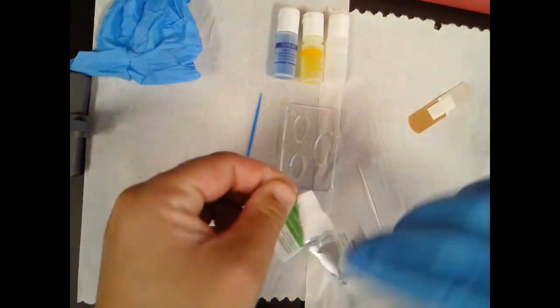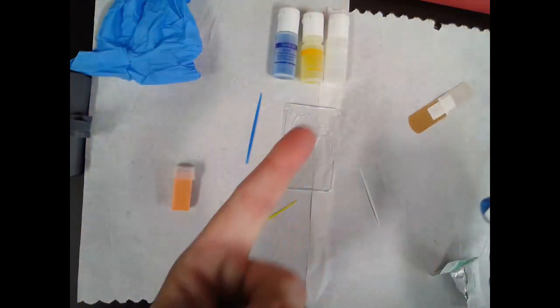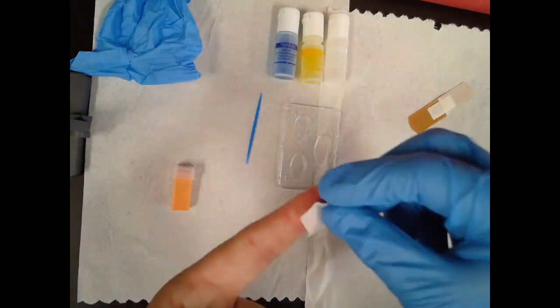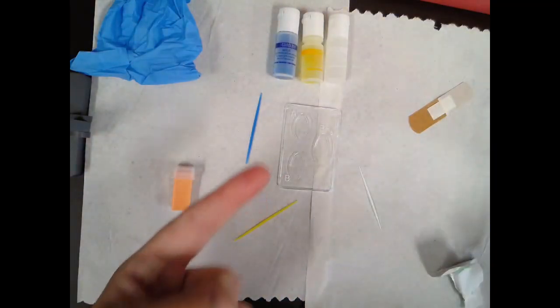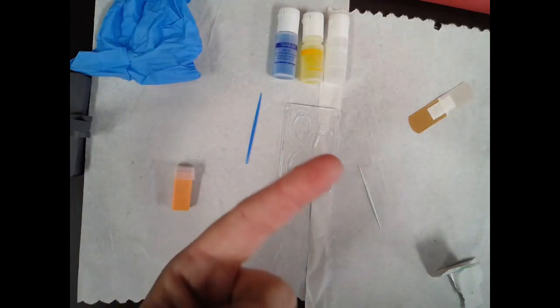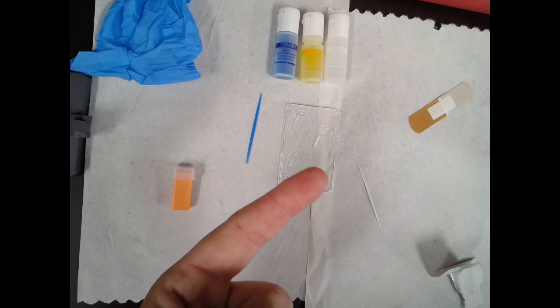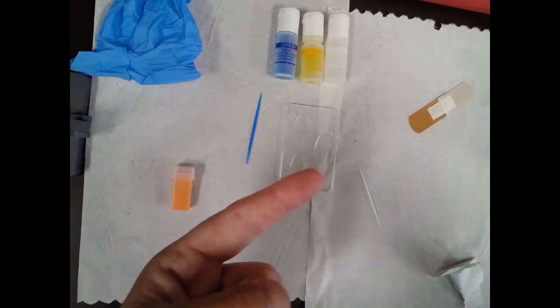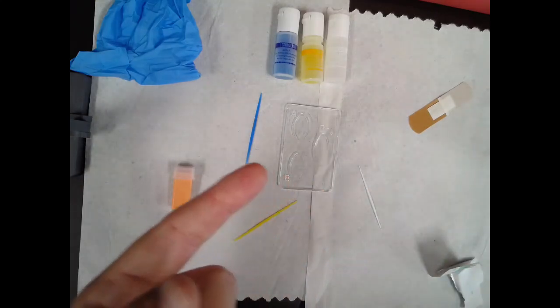First, let's open up the alcohol swab. I'm going to use my left index finger. Do not blow on your finger to try to dry it because that will defeat the whole purpose of trying to disinfect your skin in this area because you'll blow bacteria on it. So just give it a moment, let it air dry.